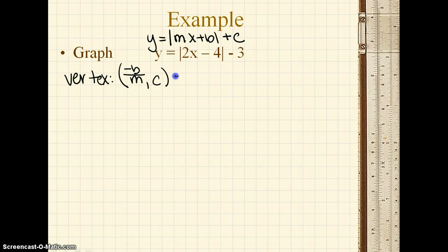So again, we need negative b over m. So b is negative 4, so negative negative 4, and m is 2. So that would give us positive 4 divided by 2, which is 2. From there, you just need to pick up the c, and the c is negative 3, so our vertex is 2, negative 3.